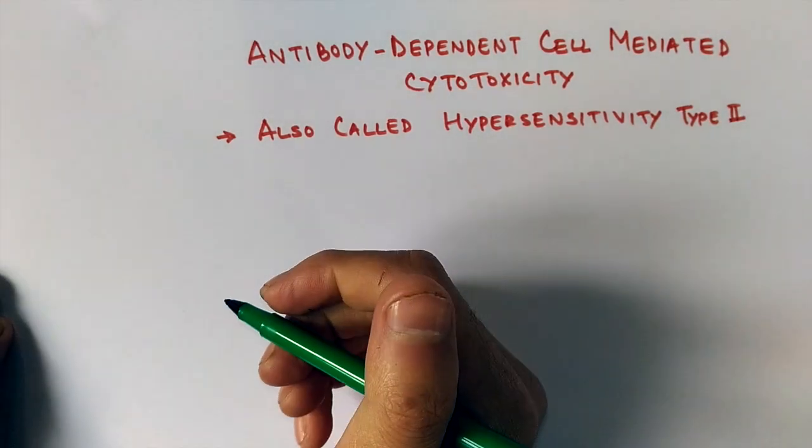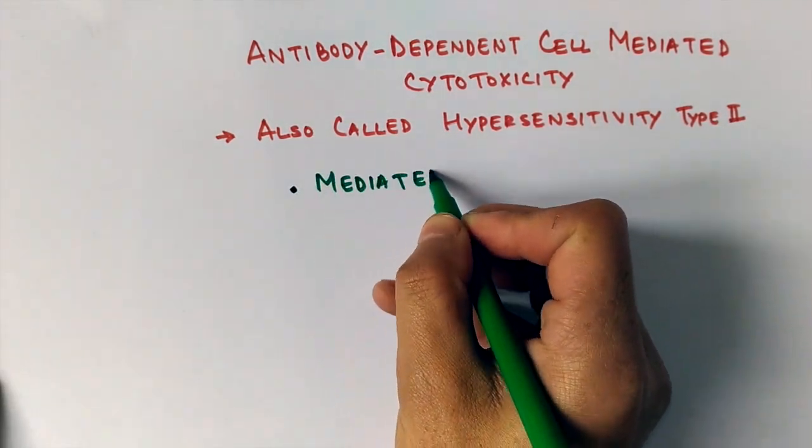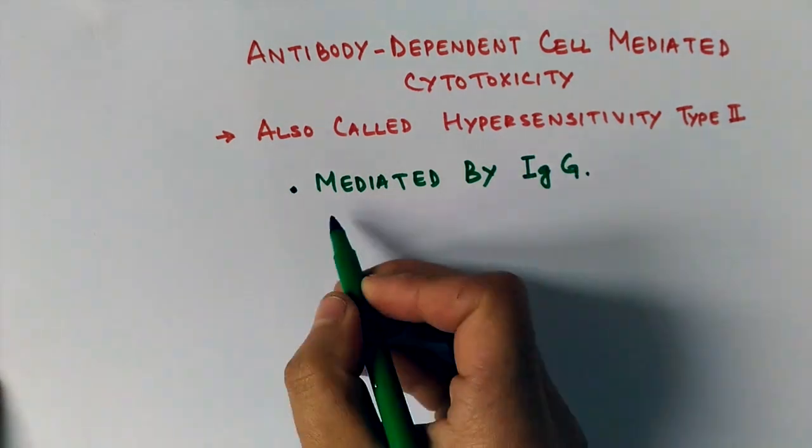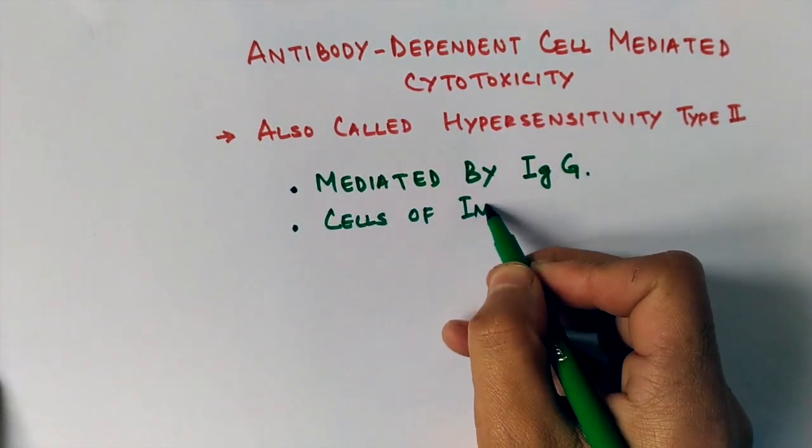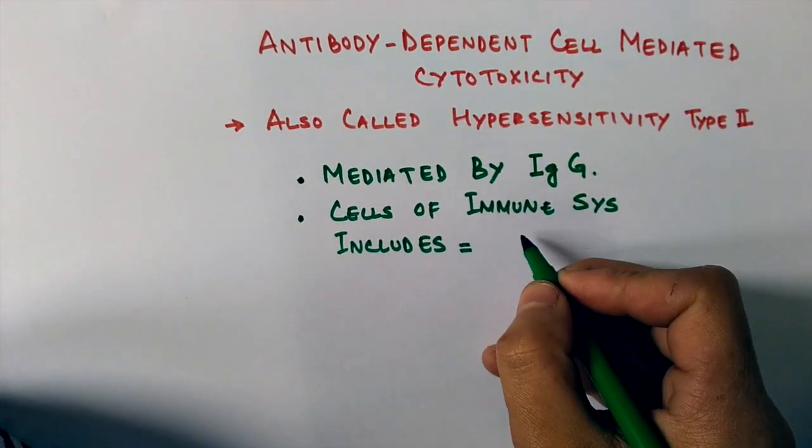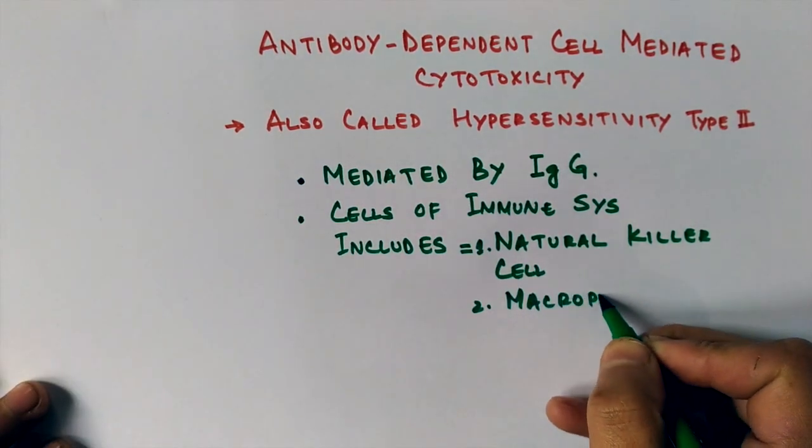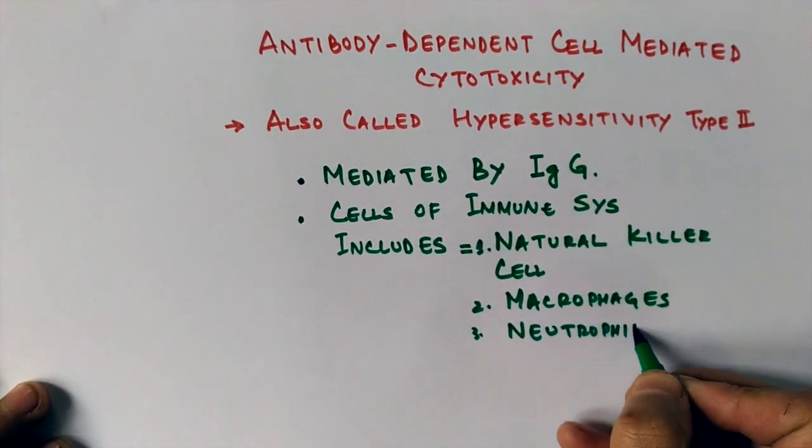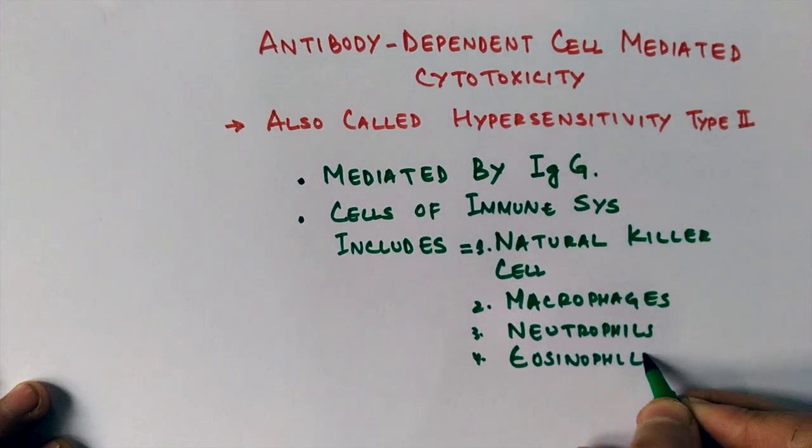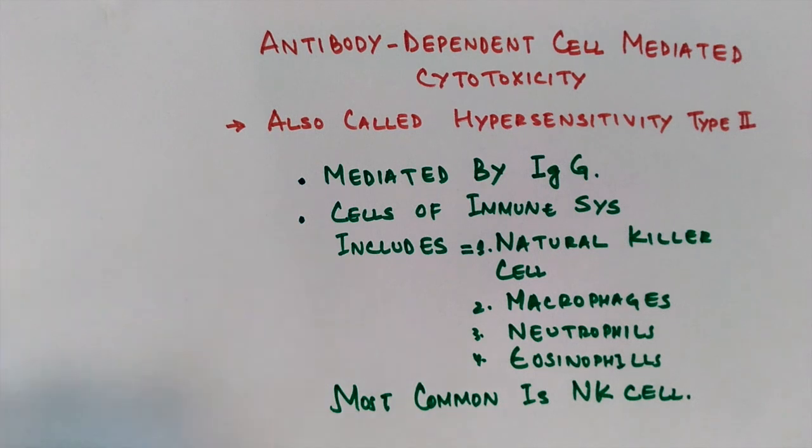First, this type of cytotoxicity is mediated by IgG immunoglobulin. Cells that take part in hypersensitivity reaction are natural killer cells, macrophages, neutrophils, and eosinophils from our immune system. The most common of all is natural killer cell, which is from our innate immune system and is one type of cytotoxic lymphocyte.